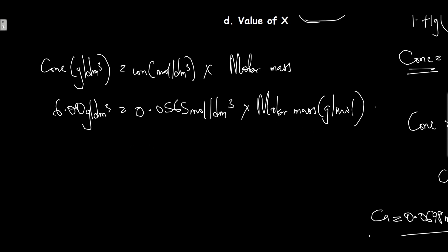Let the molar mass be M. Making the molar mass the subject of formula, we divide both sides by 0.0565 mol/dm³.